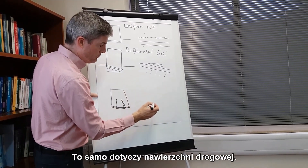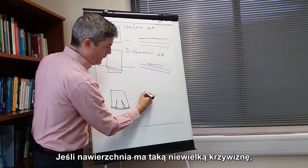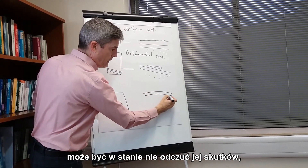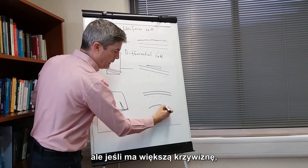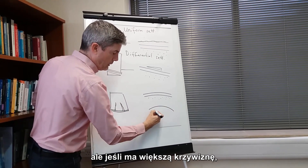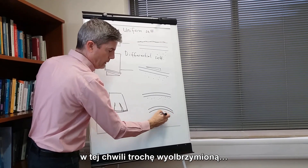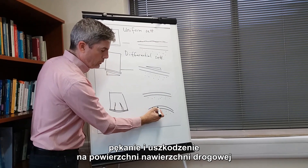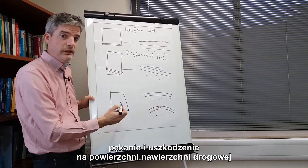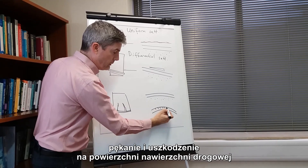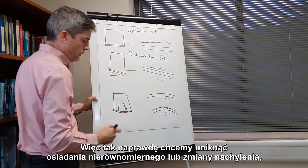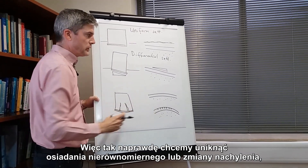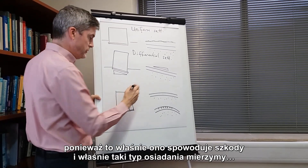The same goes for a pavement. If the pavement has a low curvature, it may be able to sustain that okay. But if it has a higher curvature — exaggerated there — that is going to quite likely cause cracking and damage in that highway pavement surface. So it is really the curvature or the change in slope that we want to avoid, because that's what causes the damage.